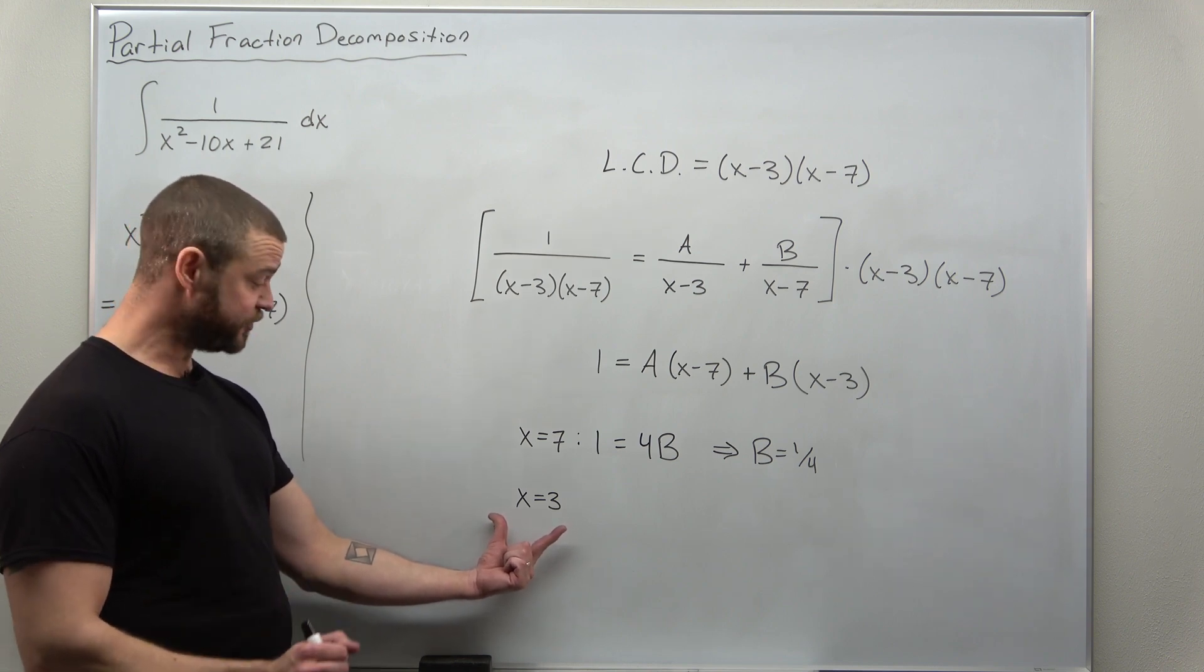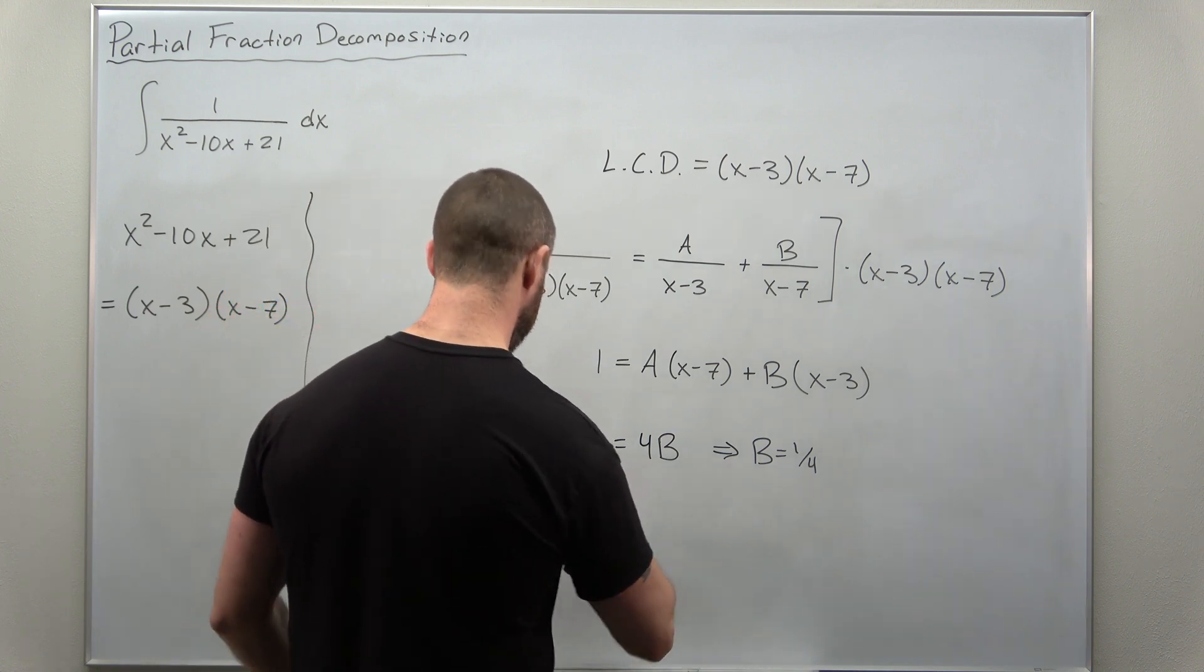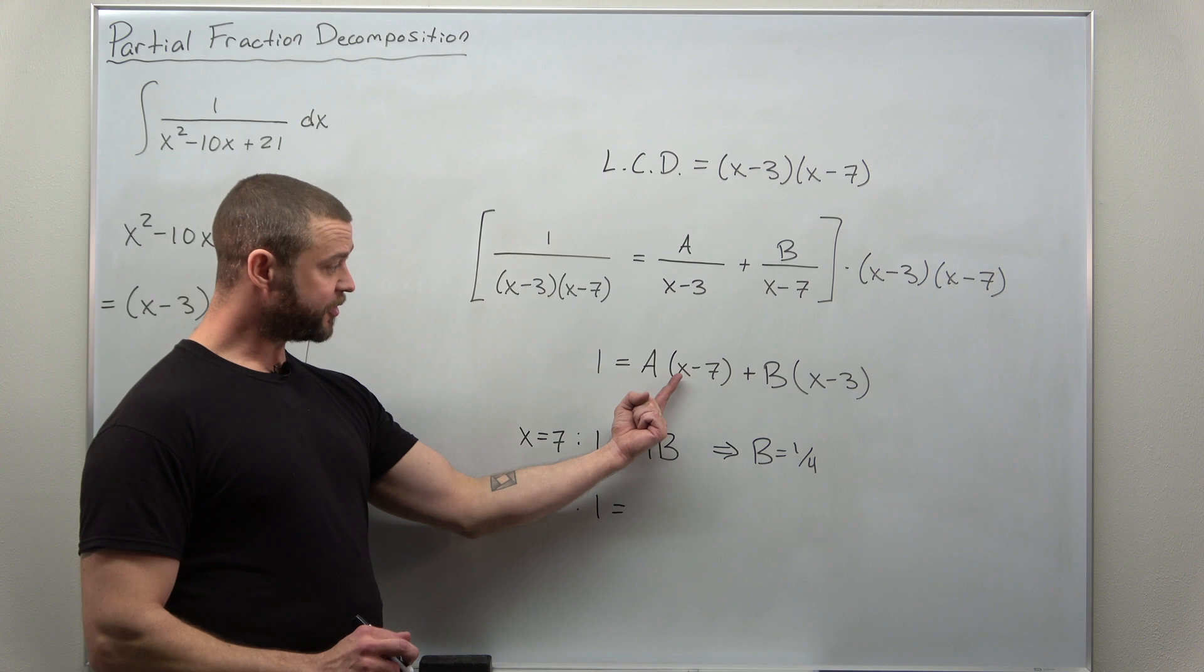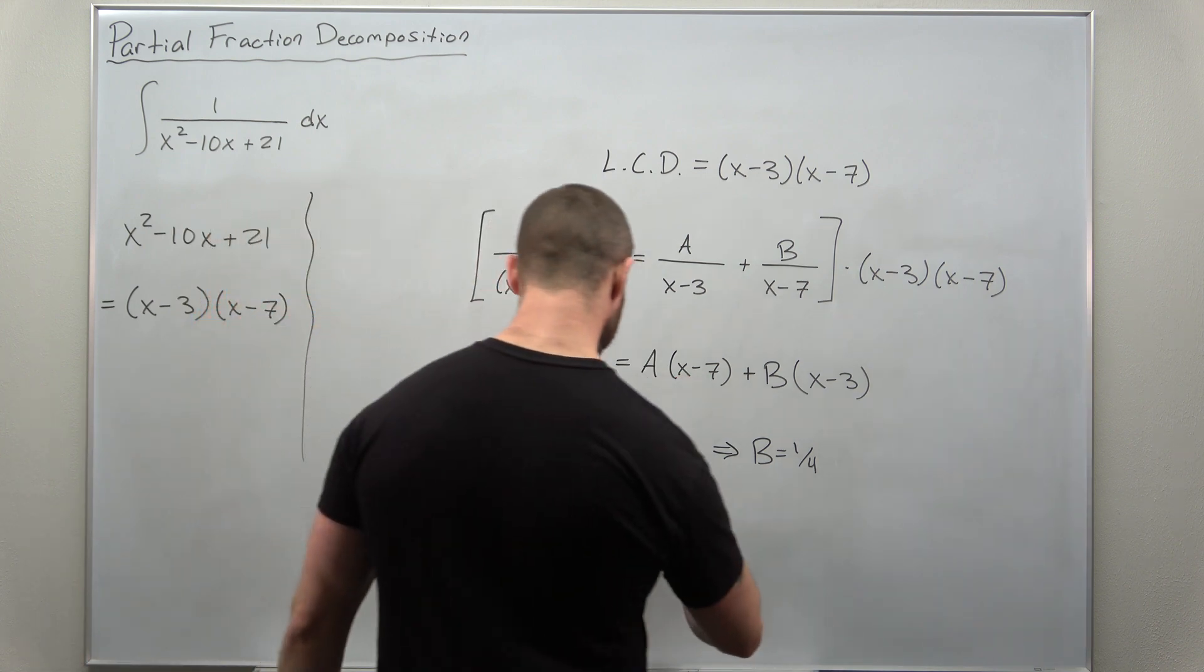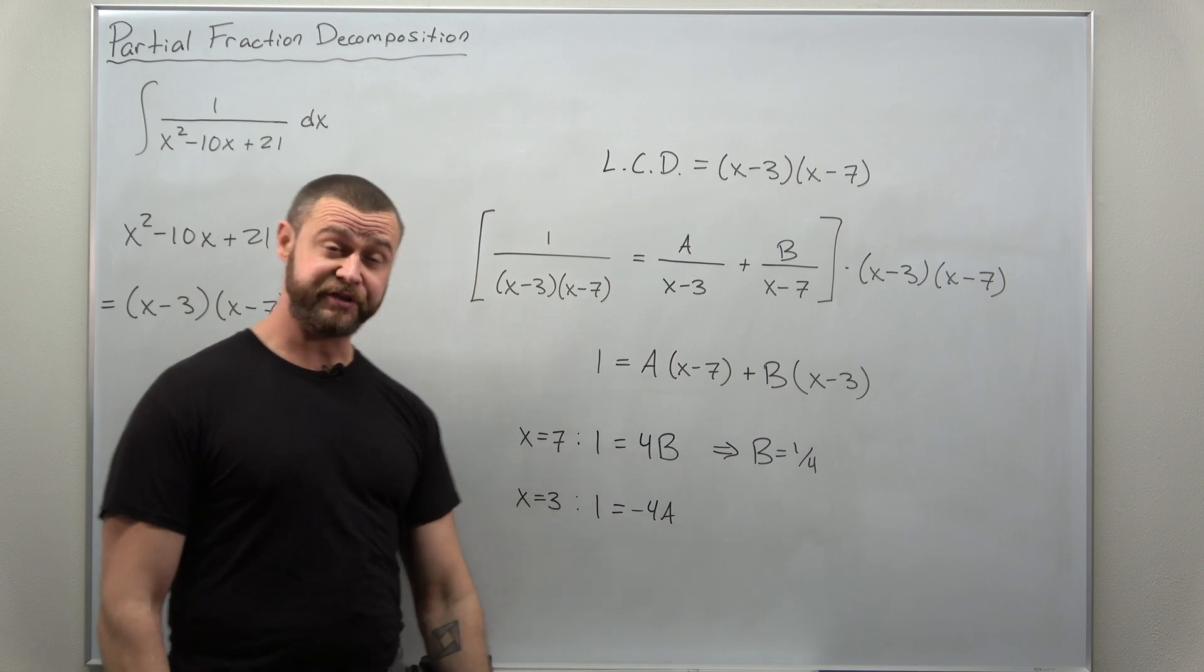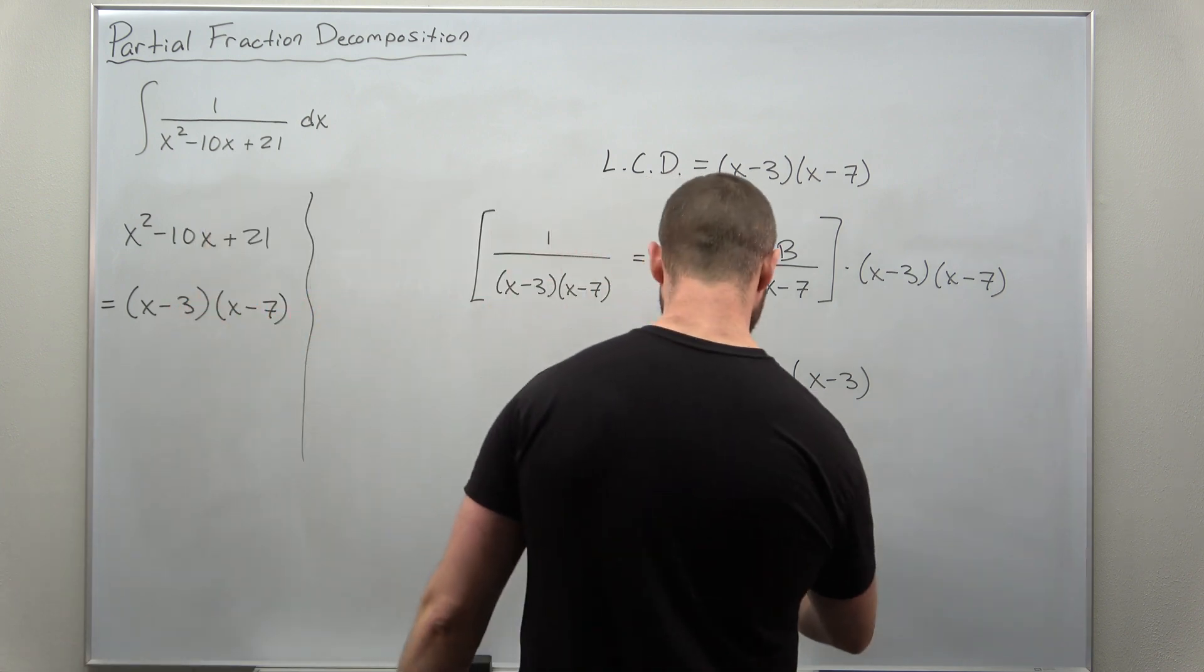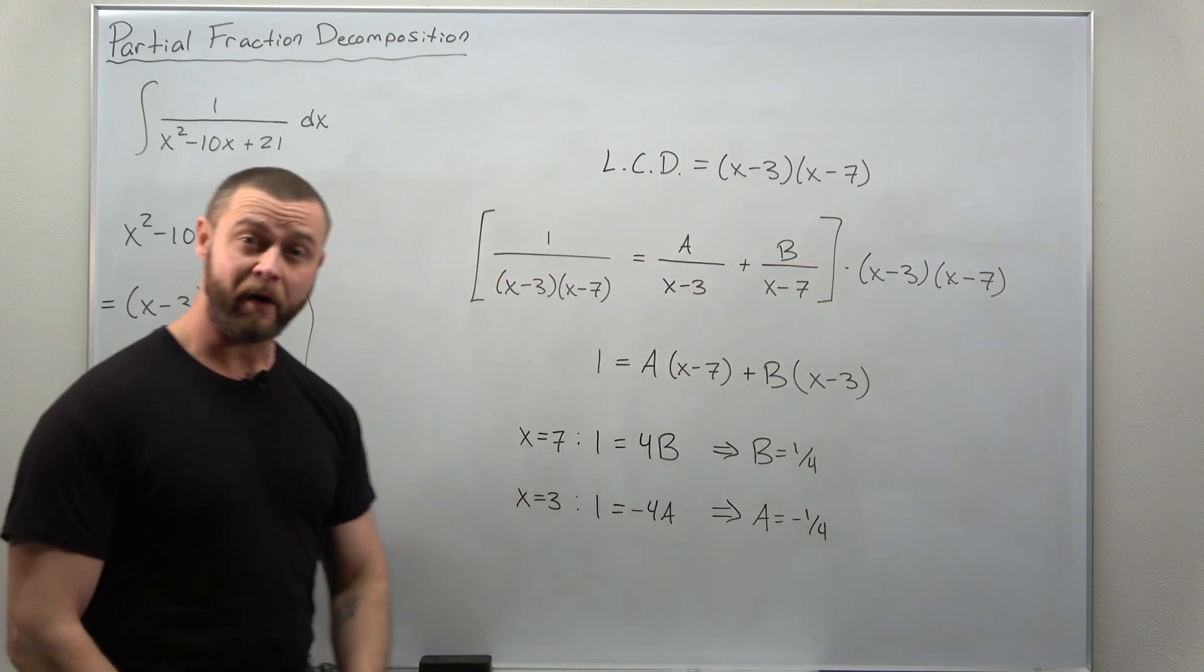To get the value of A, we're just going to plug in the other value of x that we chose. So now we're going to plug in x equal to 3 everywhere. The left side is still 1. But now when x is 3, the A term remains, but 3 minus 7 we get a factor of negative 4 times A. And now it's the B term that evaluates to 0, that's gone. Again, this is very simple to solve for A. Just divide by negative 4, so it looks like we get the value for A as negative 1 fourth.